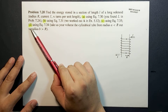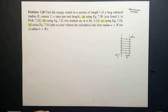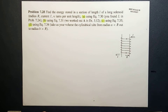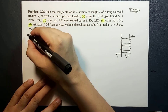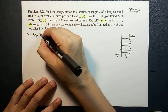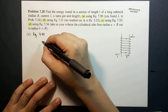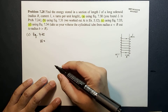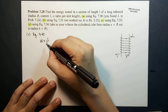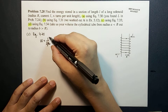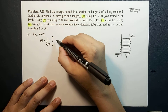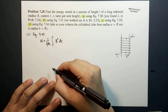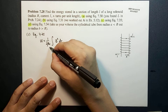For part C, we need to use equation 7.35. Equation 7.35 of your book states that the stored energy in terms of the magnetic field is one half times one over two mu-naught times the integral of B squared d-tau, where the integral happens over all space.